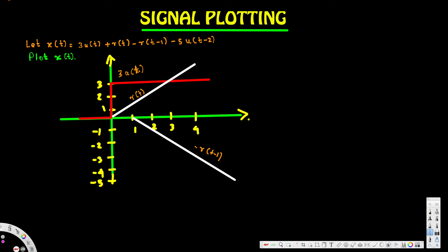So -5u(t-2) starts at t = 2 and drops five units downward. Now let's combine all of these components together to create the final graph.